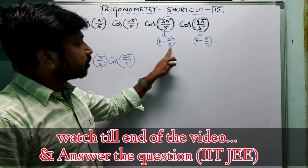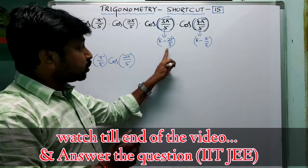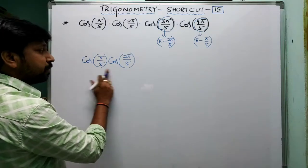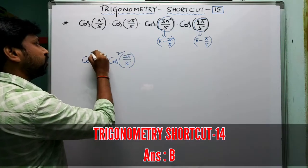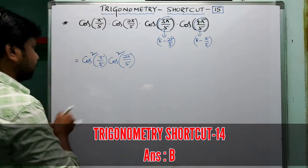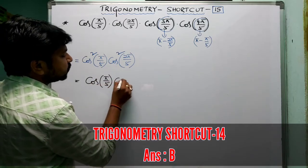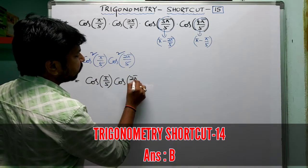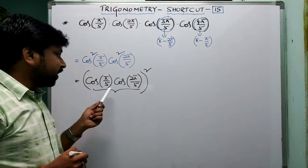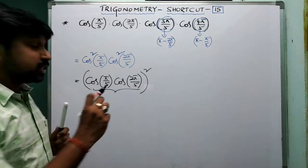Applying cos(180° − θ) = −cos(θ), we get: cos(π/5) · cos(2π/5) · (−cos(2π/5)) · (−cos(π/5)). That gives minus times minus, which is plus: cos(π/5) · cos(2π/5) · cos(2π/5) · cos(π/5). This equals cos²(π/5) · cos²(2π/5), which can be written as [cos(π/5) · cos(2π/5)]².